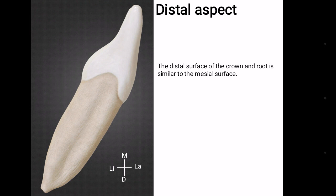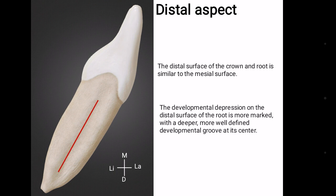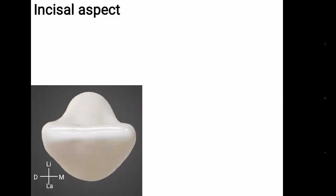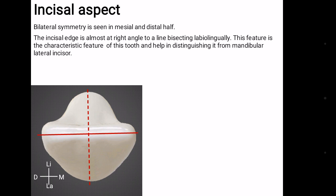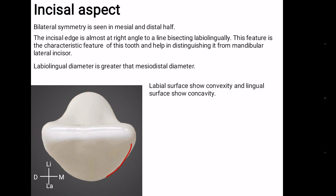Distal aspect is the surface of the tooth which is away from the midline. The distal surface of the crown and root is similar to the mesial surface. The developmental depression on the distal surface of the root is more marked with a deeper, more well-defined developmental groove at its center. Incisal aspect: bilateral symmetry is seen in the mesial and distal halves. The incisal edge is almost perpendicular to the line bisecting labio-lingually. This is a characteristic feature of this tooth and is helpful in distinguishing it from the mandibular lateral incisor. The labio-lingual diameter is greater than the mesio-distal diameter. The labial surface shows convexity and the lingual surface shows concavity. That's all about mandibular central incisor.